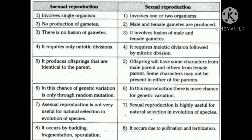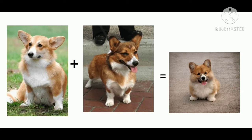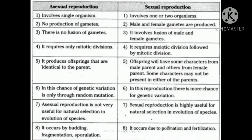Asexual Reproduction produces offspring that are identical to parents — just like Xerox copies of parents with the same characters. In Sexual Reproduction, offspring will have some characters from the male and some from the female, so new characters are produced. New characters arise in sexual reproduction due to chromosomal recombination that occurs during meiosis. Whereas in Asexual Reproduction, only parental characters are produced.